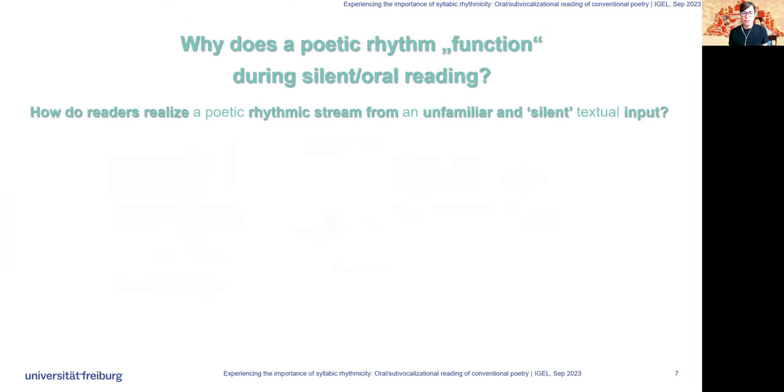Coming back to our lead question, we refined it by asking how do readers realize a poetic rhythmic stream from an unfamiliar and silent textual input? How do readers infer a beat from that silent rhythmic gestalt and project a meter? To find partial answers to this puzzle, we conducted two experiments.